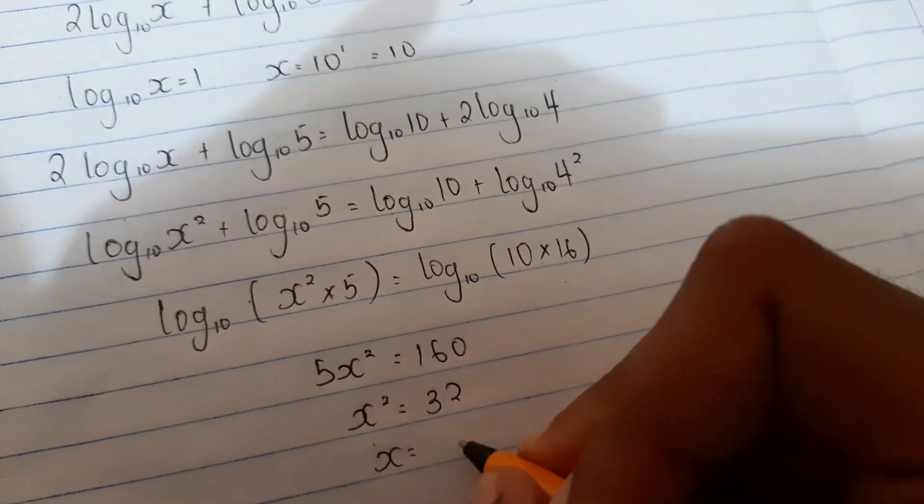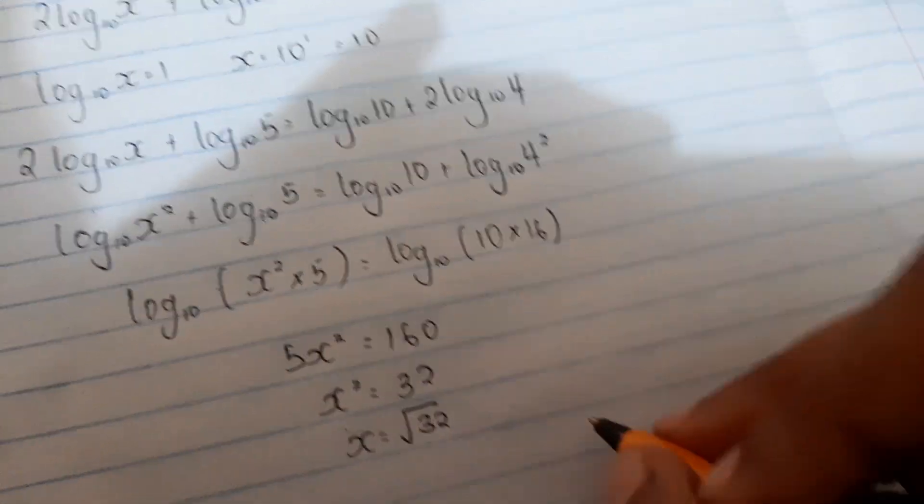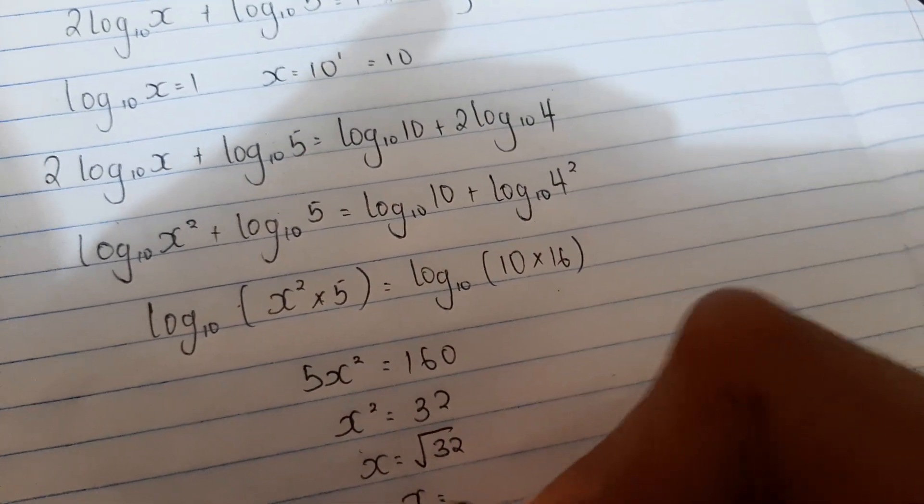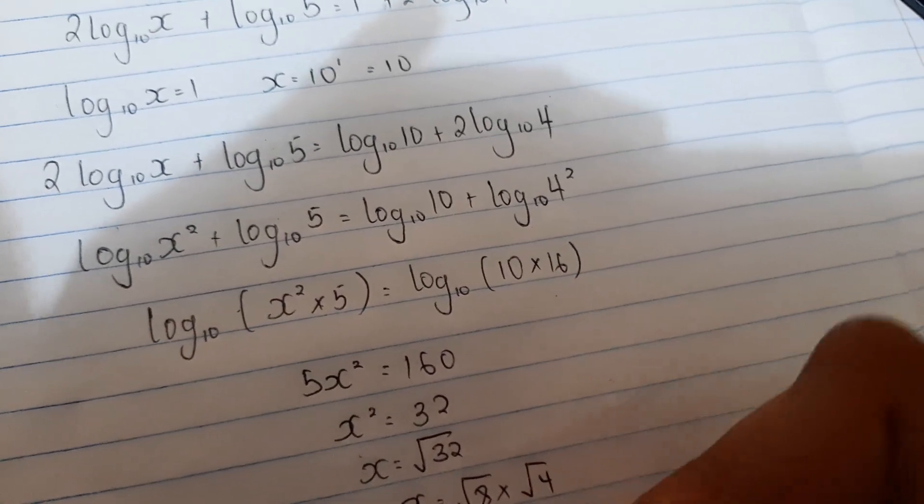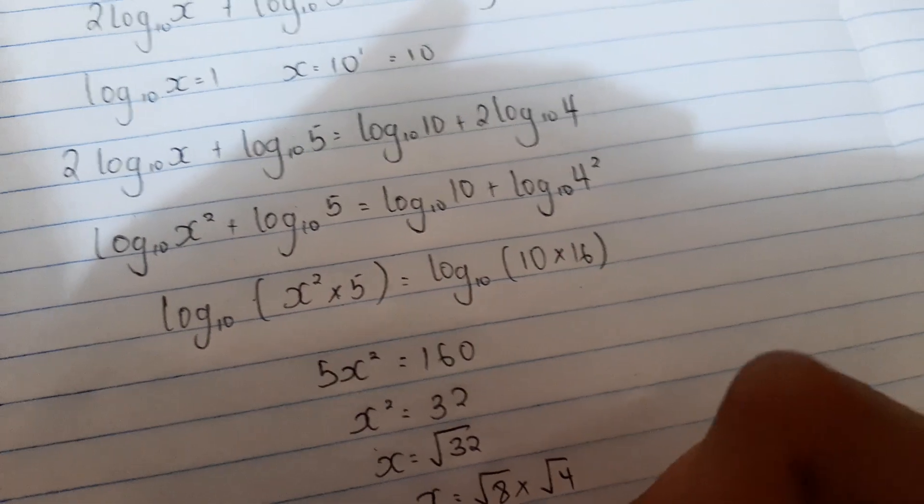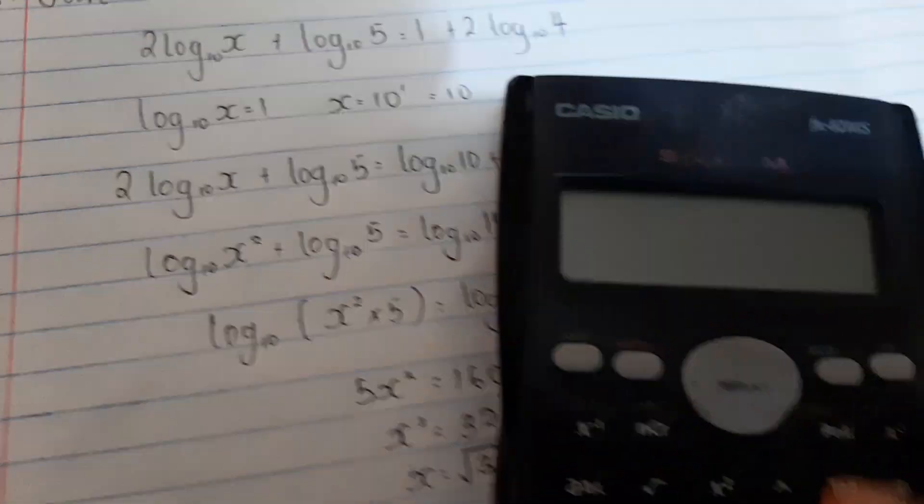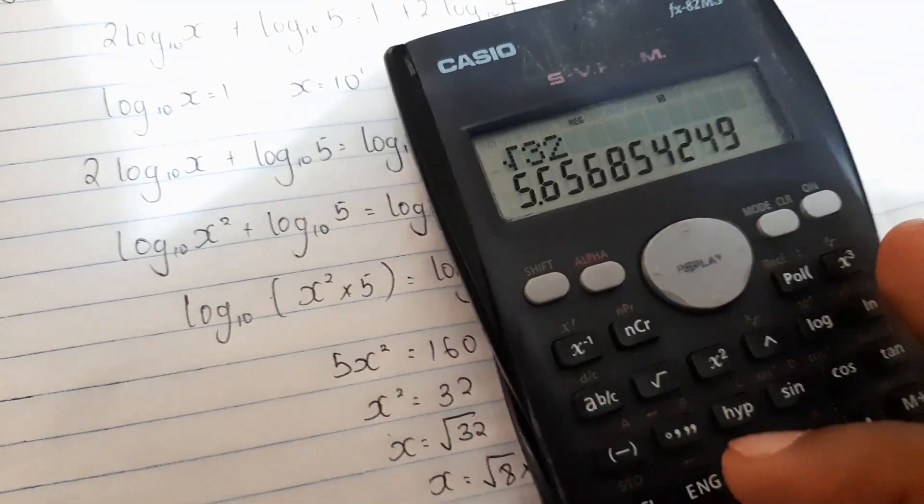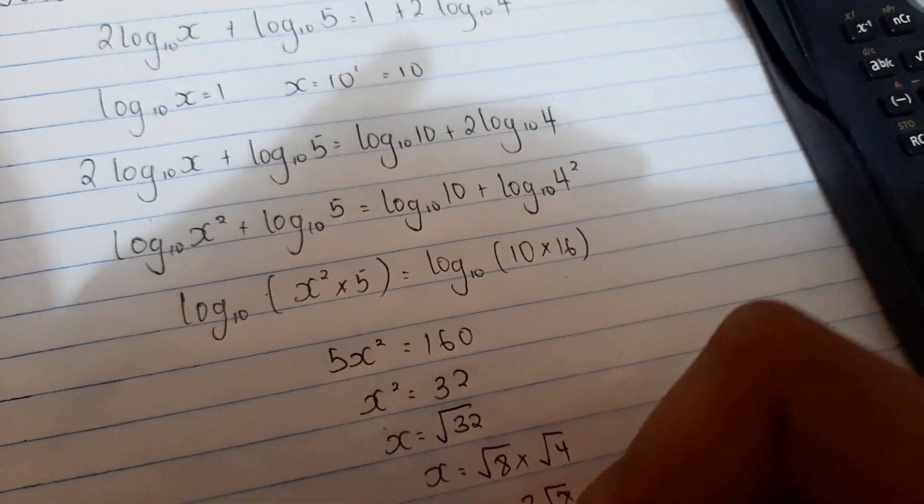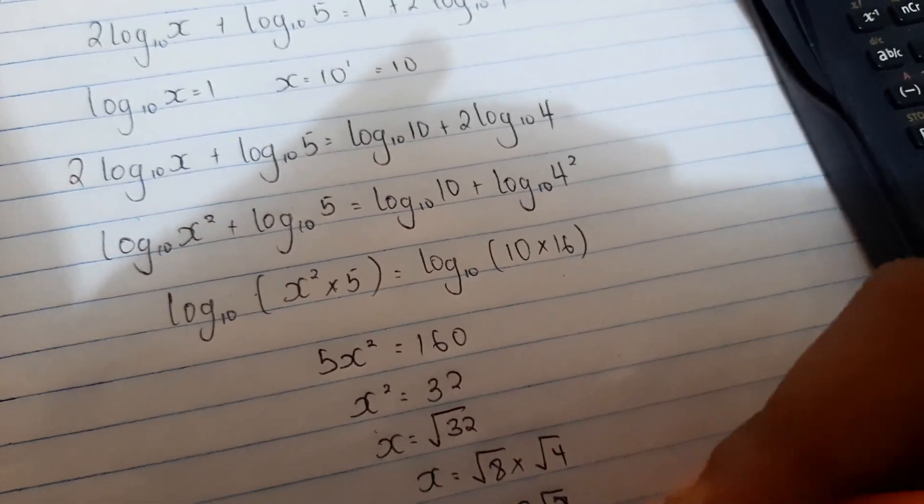Therefore, x equals root 32. We can simplify: root 32 equals root 8 times root 4. Root 4 is 2, so x equals 2 root 8. Using a calculator, root 32 equals 5.656. So x equals 5.656. Thank you.